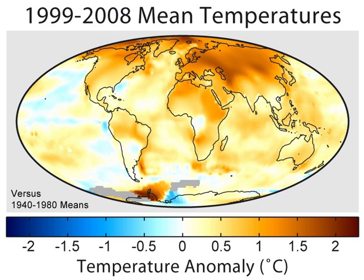An increase of global temperature by more than 2 degrees Celsius has come to be the majority definition of what would constitute intolerably dangerous climate change, with efforts to limit the temperature increase to 1.5 degrees Celsius above pre-industrial levels per the Paris Agreement.